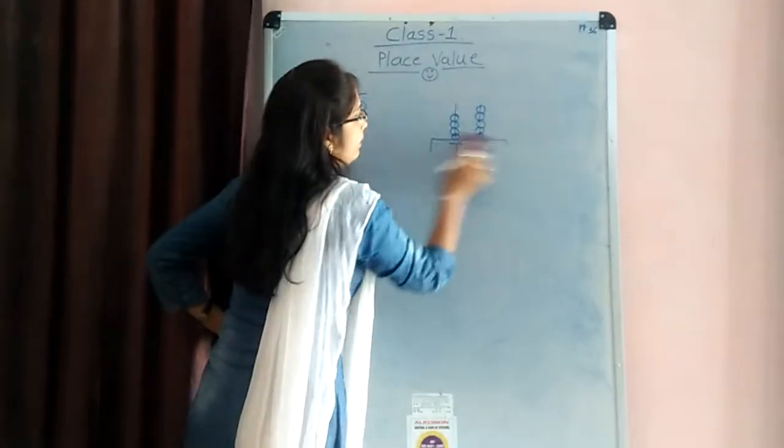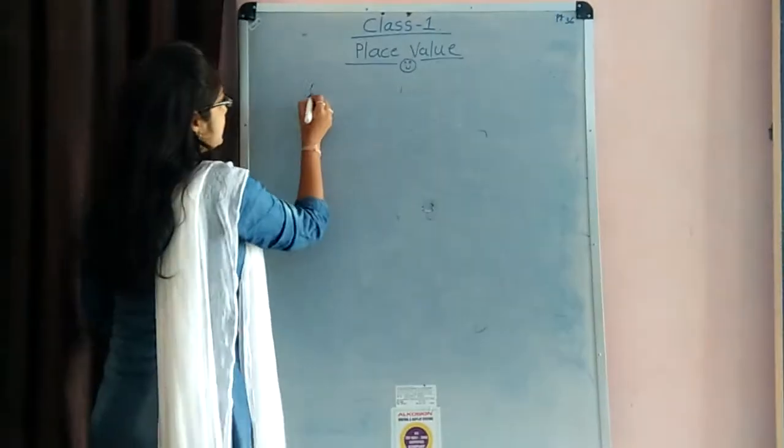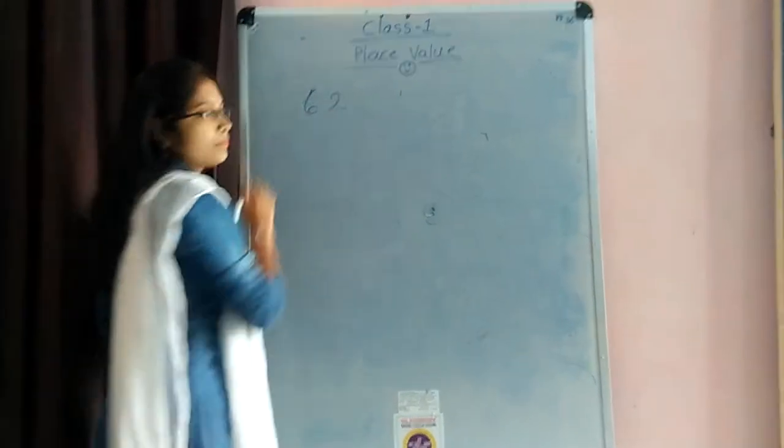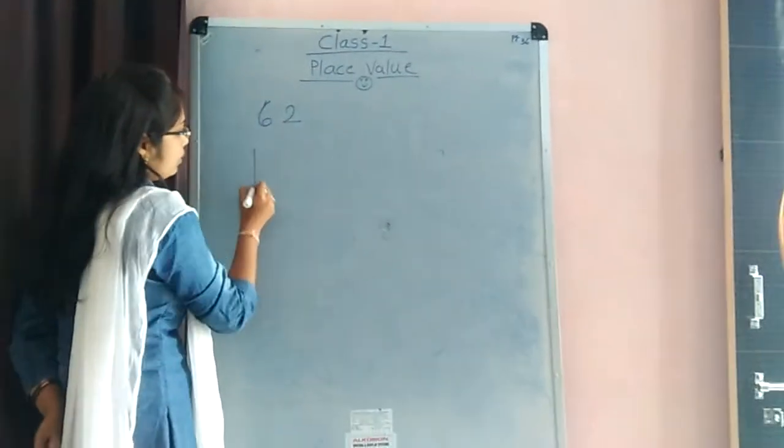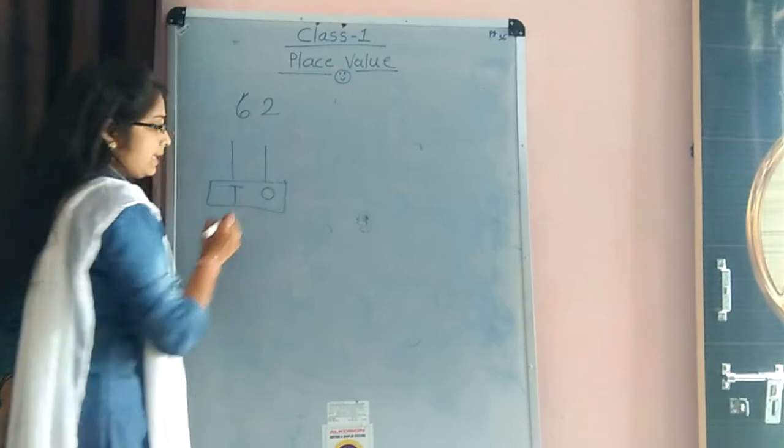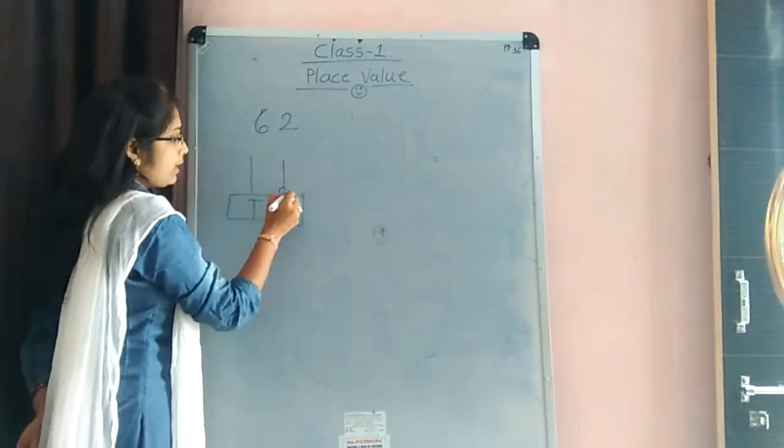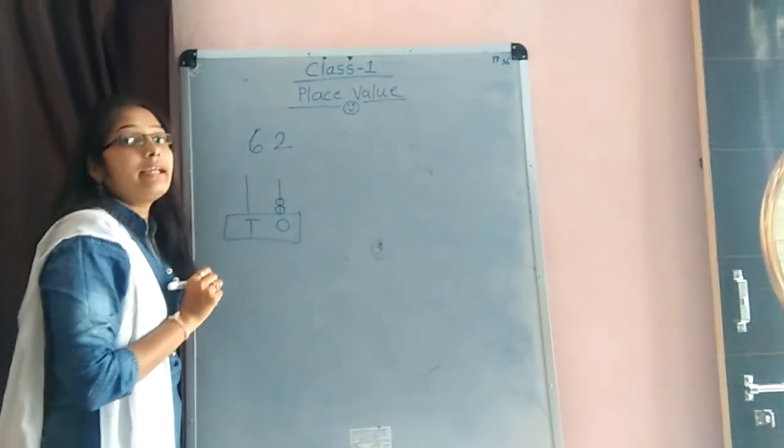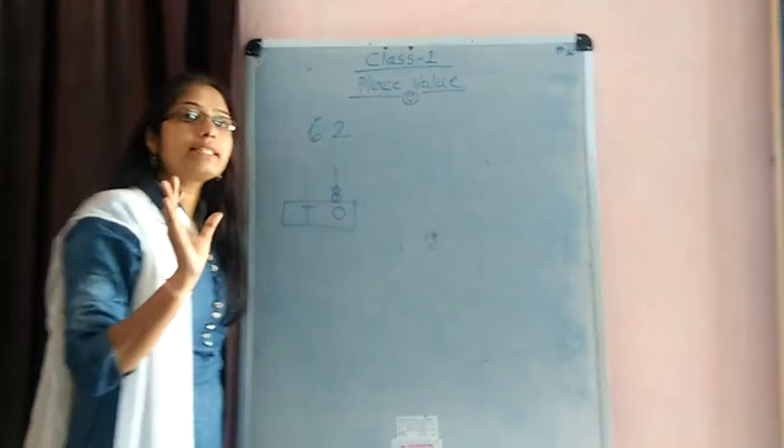Again, we will take one number. That is a 62. If we want representing abacus method, then like that, 1s place, 10s place, even 1s place, there is a number 2. So, we can draw here 2 bits. In 10s place, there is a 6 number. So, we can draw there 6 bits.